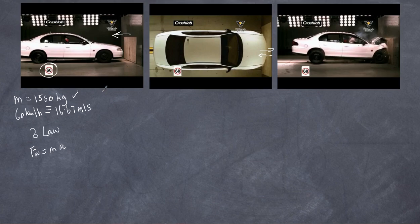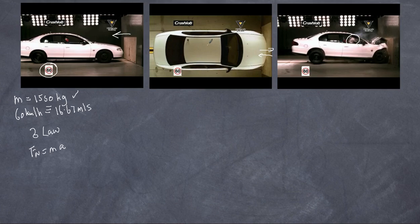We can also talk about inertia — the concept that an object continues at rest or constant velocity unless acted on by an external force. When the car collides, the passenger keeps moving because the force is applied to the car initially, not the passengers. So the passengers continue to move at 60 km/h until they experience a force — in this case applied by the airbag, which you can see deploys at the collision.